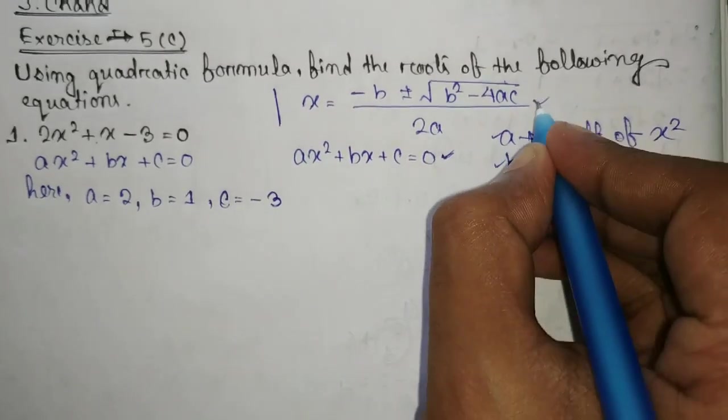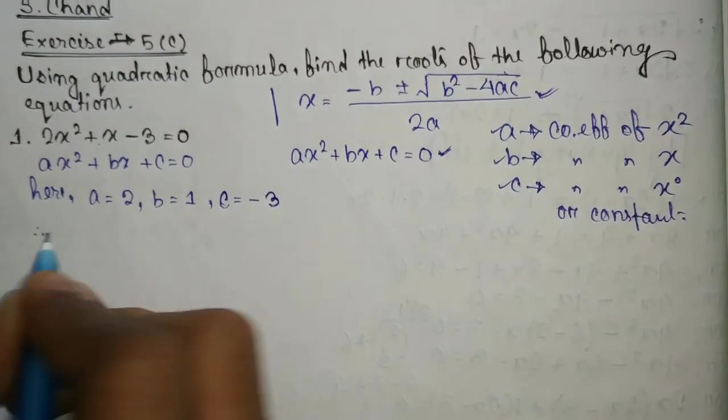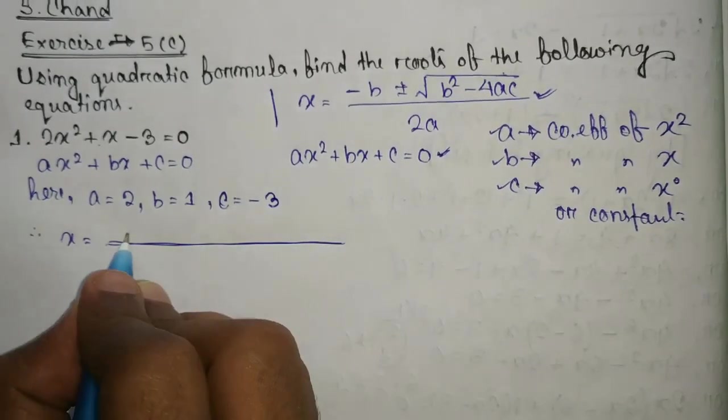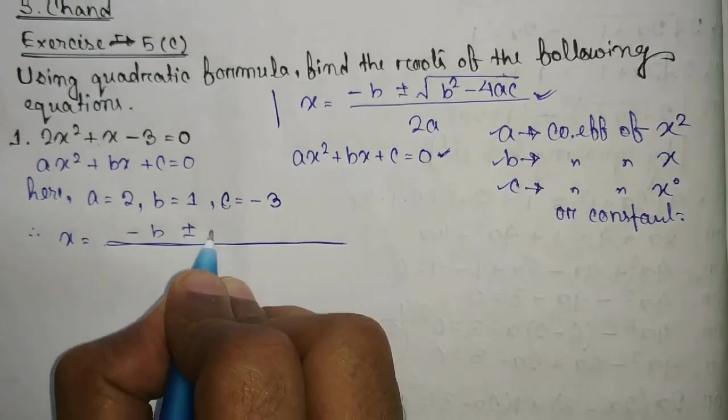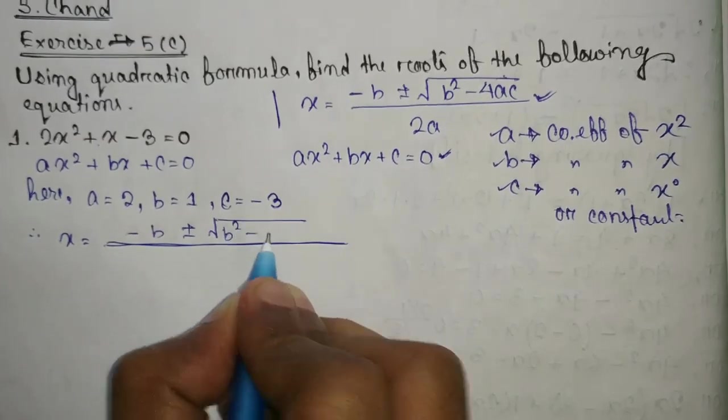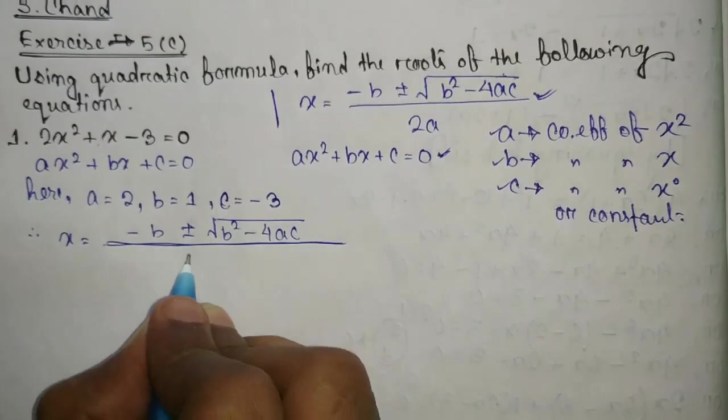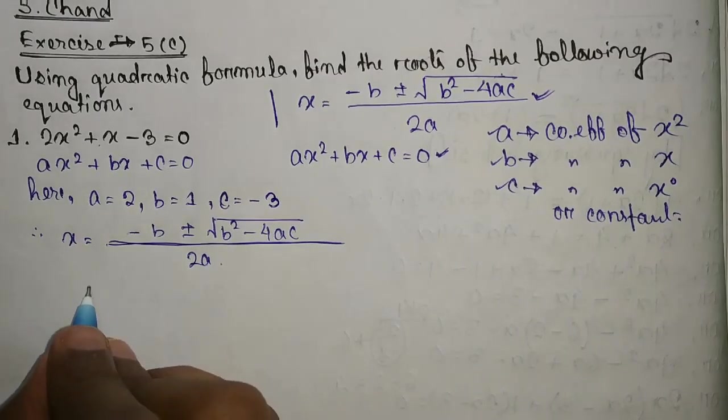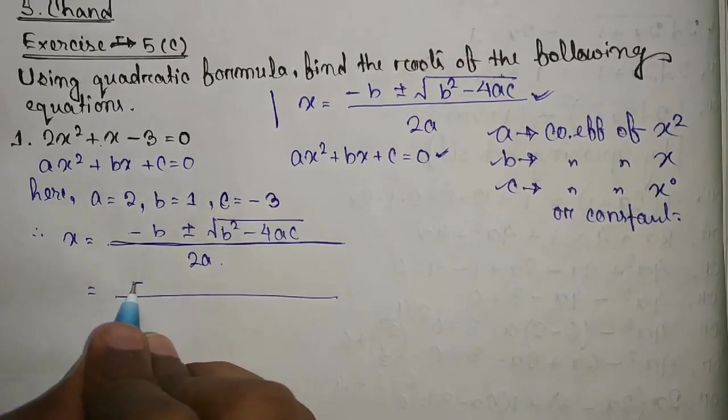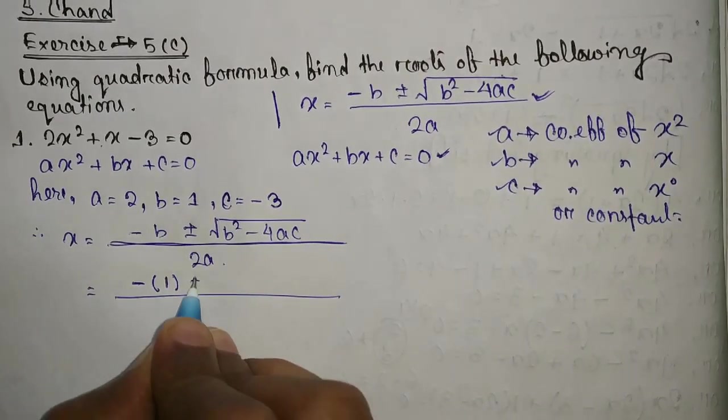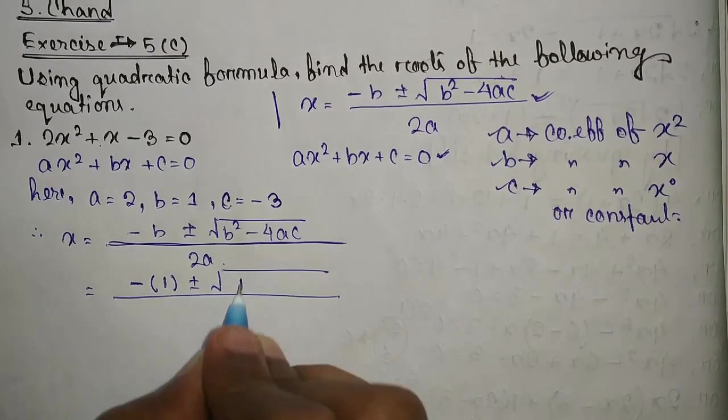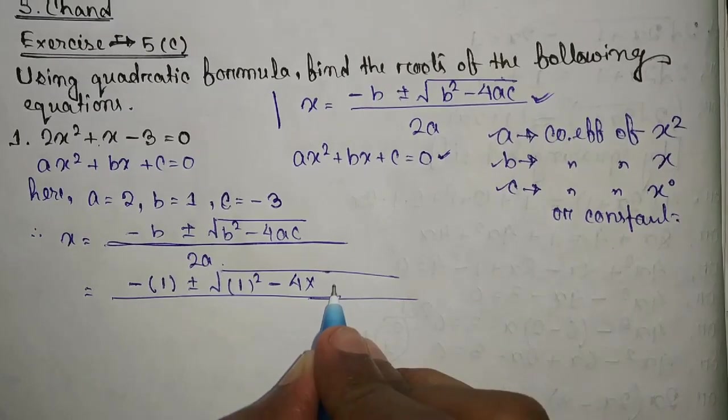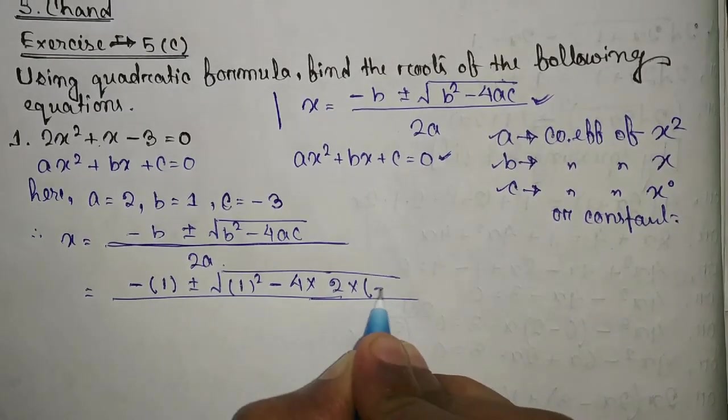Now put in this formula in the quadratic formula. Therefore x equal to minus b plus minus root over b square minus 4ac by 2a equal to minus 1 plus minus root over 1 square minus 4 into 2 into minus 3.